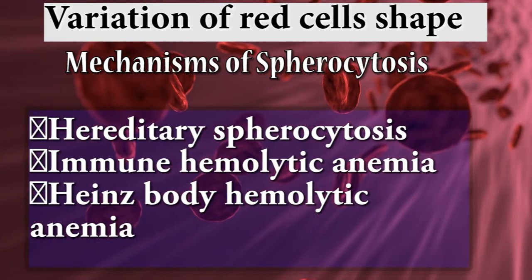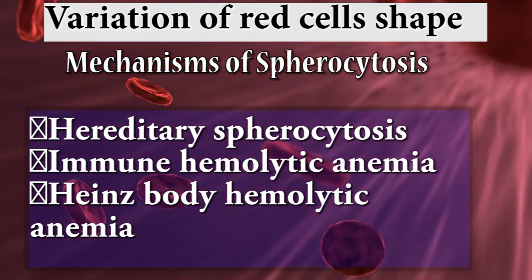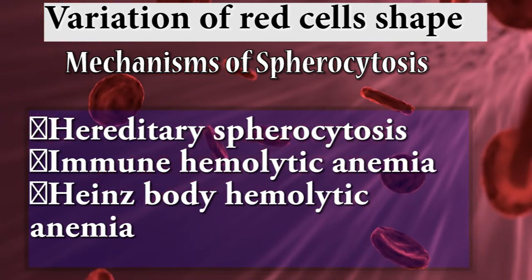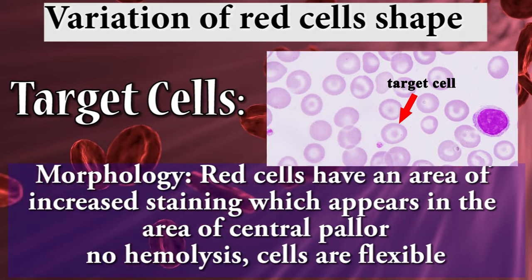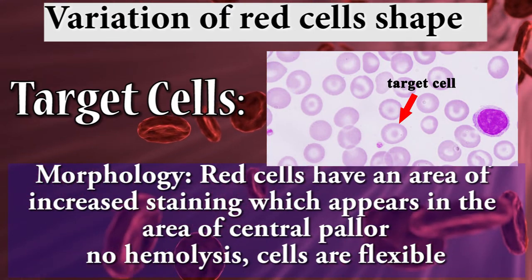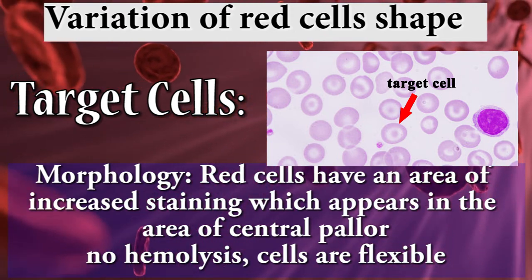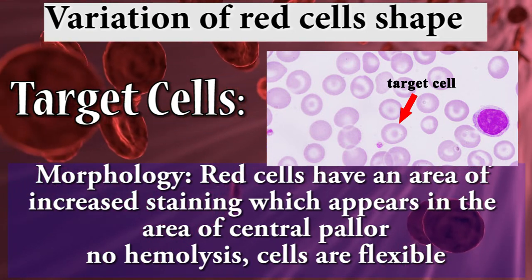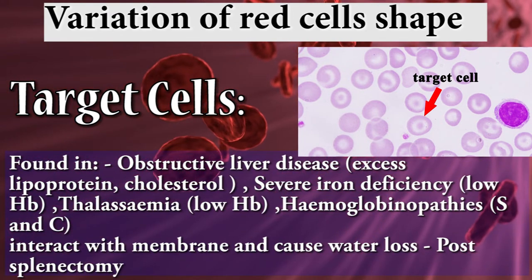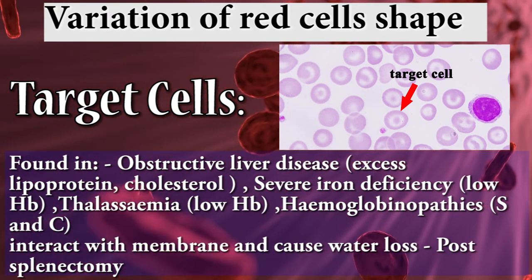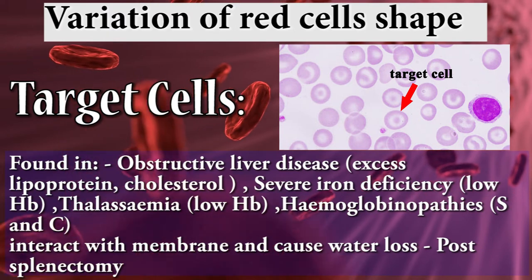There are three types of mechanisms of spherocytosis: hereditary spherocytosis, immune hemolytic anemia, and Heinz body hemolytic anemia. The second shape variation is target cells. Red cells have an area of increased staining appearing in the central pallor zone. No hemolysis; cells are flexible. Found in obstructive liver disease, severe iron deficiency, thalassemia, hemoglobinopathies, and post-splenectomy.